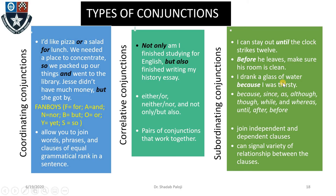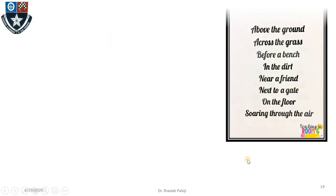'I drank a glass of water because I was thirsty' — both parts can be complete statements, but adding 'because' makes them make sense together, creating a subordinating relationship. Other subordinating conjunctions include: 'since,' 'as,' 'although,' 'though,' 'while,' 'whereas,' 'until,' 'after,' 'before.' They join the independent main clause with the dependent subordinate clause and can signal a variety of relationships such as cause-effect, result, or problem-solution.